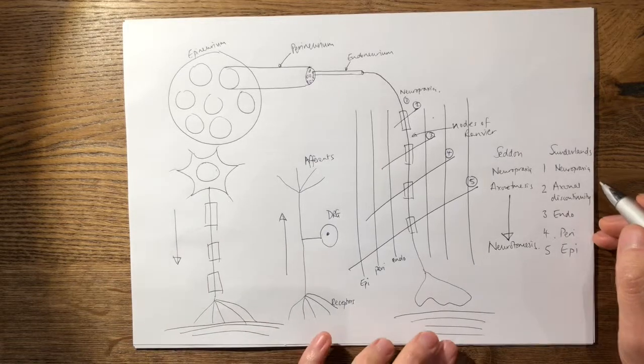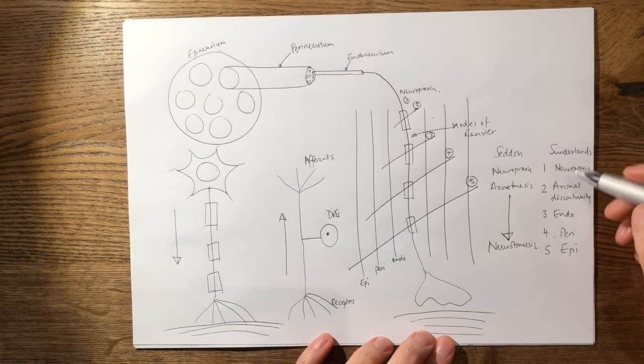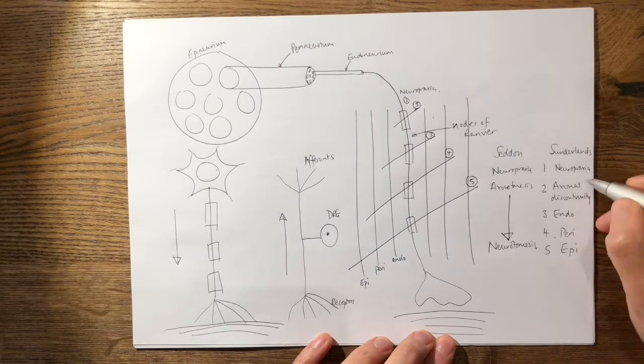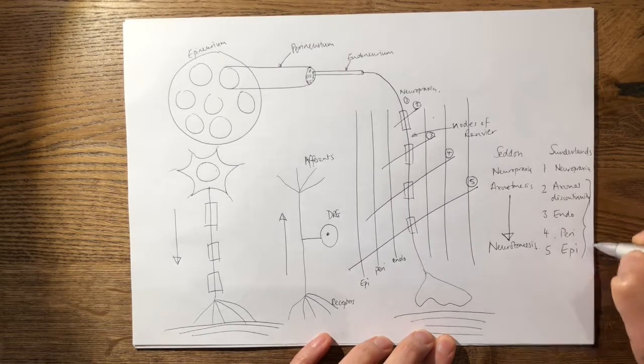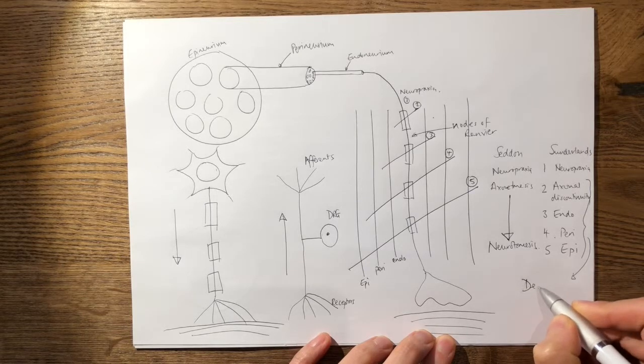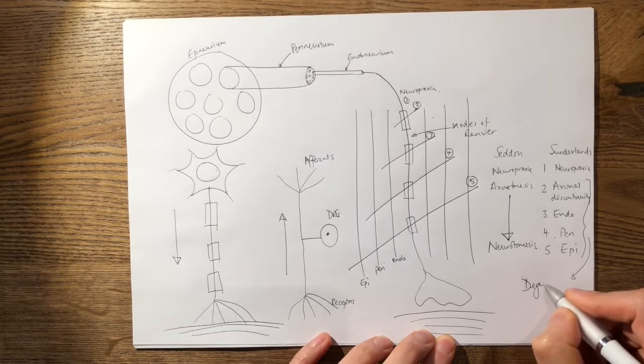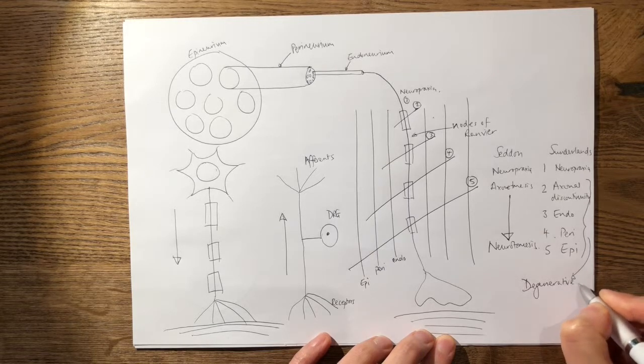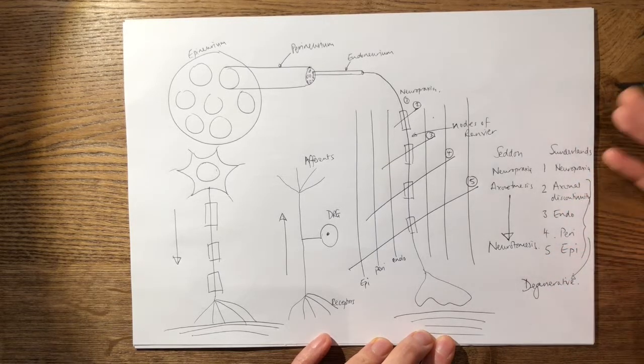So just to mention that your Sunderland two, three, four, and five, these are your degenerative lesions. And your degenerative lesions are your lesions which will cause Wallerian degeneration.